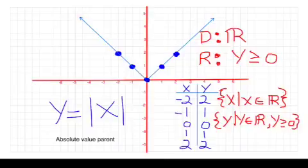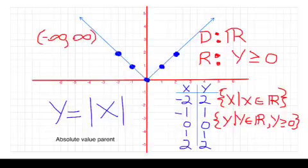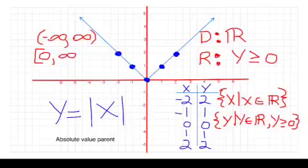And if we want to do this in interval notation, the domain goes from negative infinity to positive infinity. Remember we put parentheses here to show that we don't include negative infinity or positive infinity. And the range starts at zero. Notice that I'm putting a bracket here because we include zero. And it goes to positive infinity. Notice I'm going to close it with a parenthesis. That's interval notation for the same information.